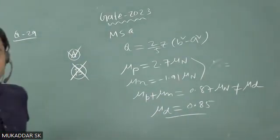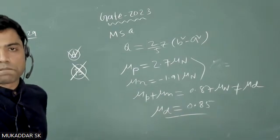So this option B is actually not correct. The magnetic moment of a deuteron cannot be the sum of the magnetic moment of proton and neutron.